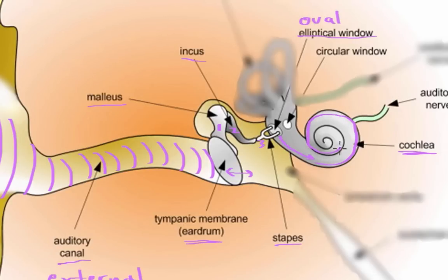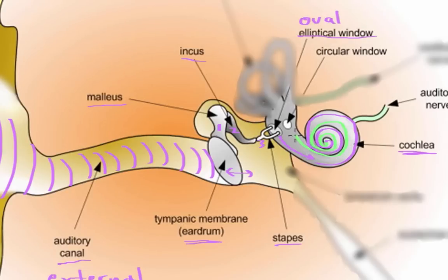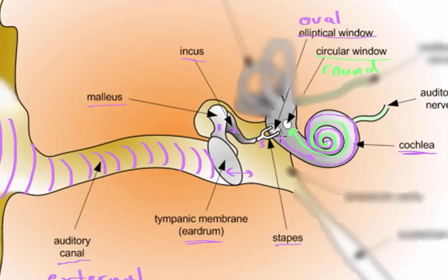The fluid travels all the way around the cochlea until it reaches the tip. When it reaches the tip, the only thing it can do is go back. So the fluid moves back towards where it came, but it doesn't return to the oval window — it actually goes to another window known as the circular or round window, causing the round window to get pushed out.